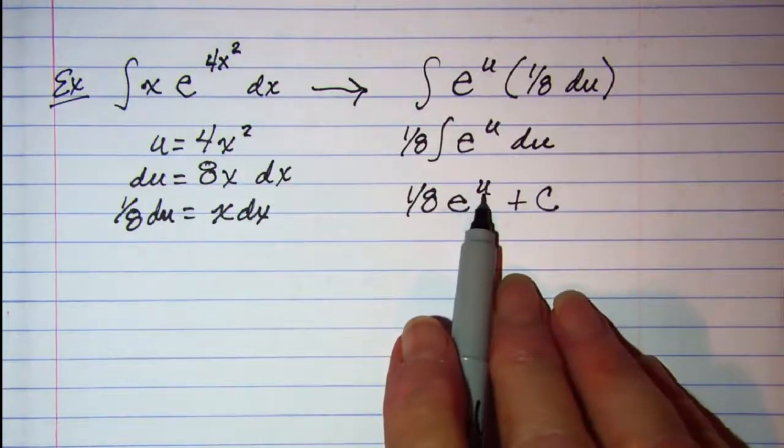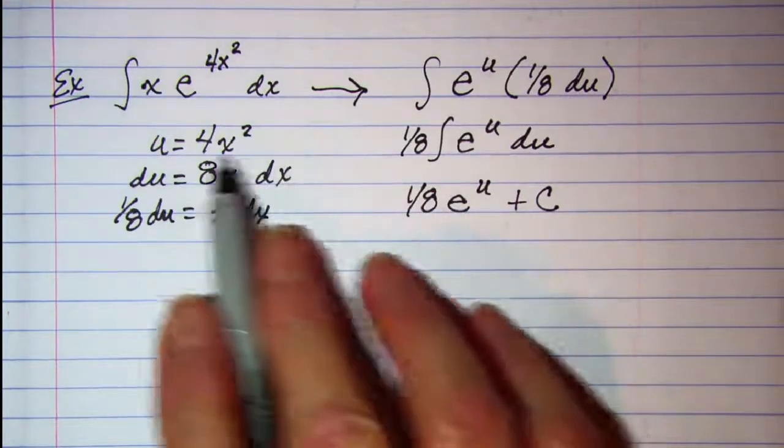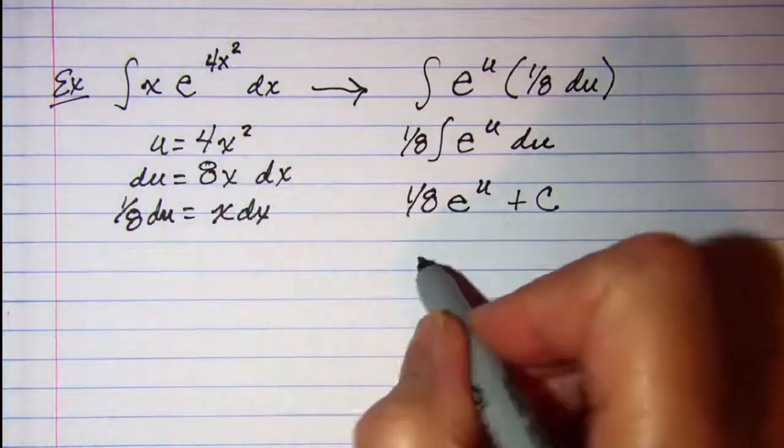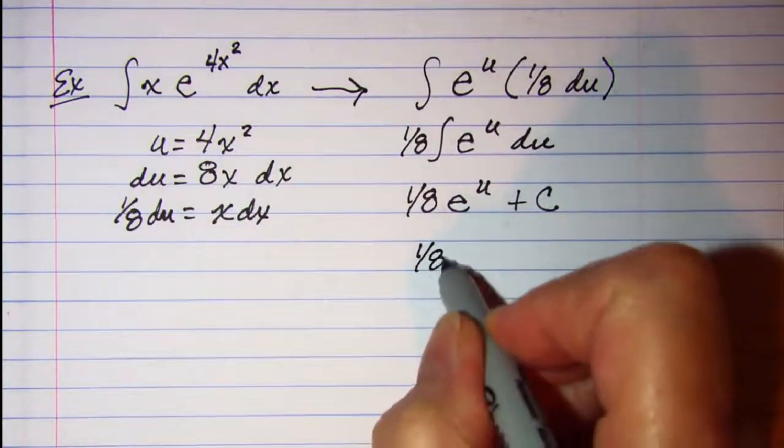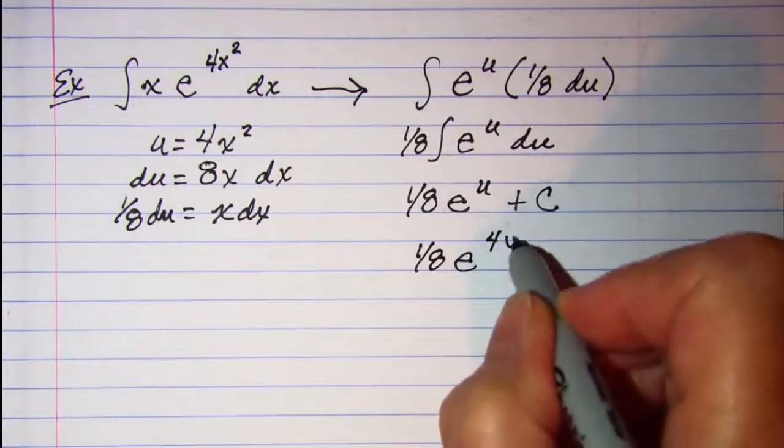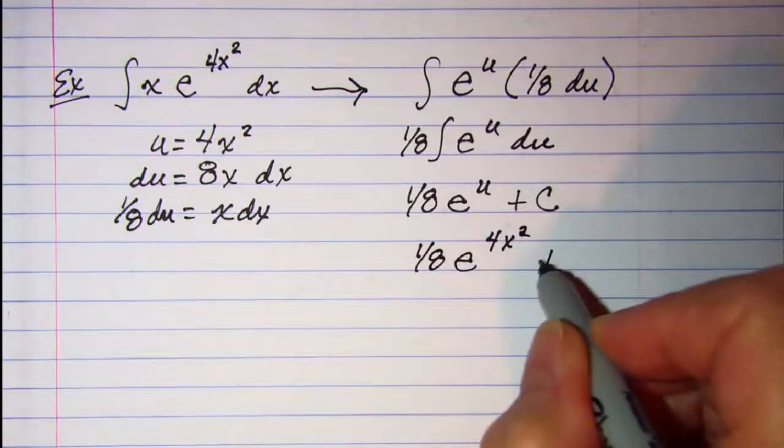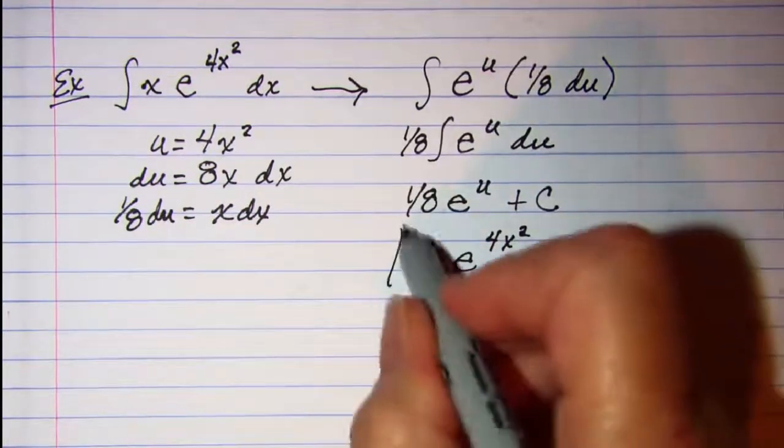Let's go ahead and sub back in for u of 4x squared. So we get 1 eighth e to the 4x squared plus a constant.